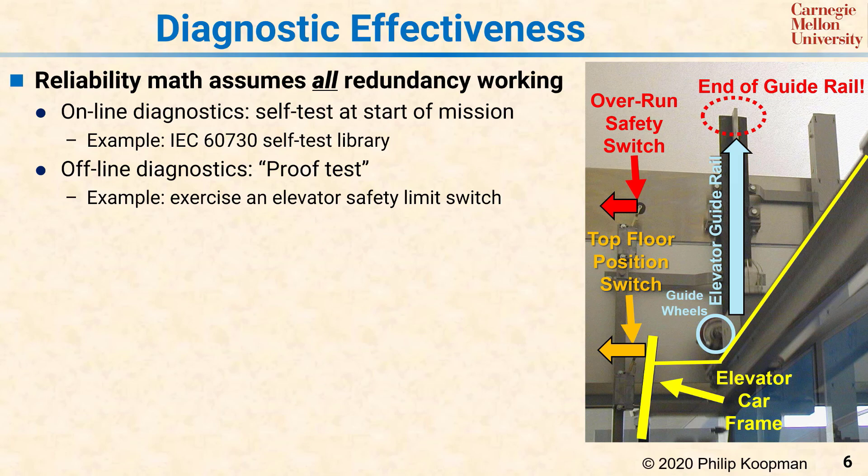That includes sensors, actuators, and redundant computational elements. What proof tests are really getting at is looking for latent undetected faults—faults in the redundancy that you cannot tell are there because normal functionality masks the failure in the redundancy.